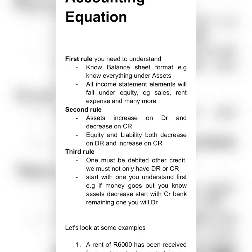The third rule: when we are dealing with accounting equation, if one account is debited, the other one must be credited. There is no way you will find a transaction where all amounts are debited — it doesn't work like that. One must be debited and the other one must be credited. After all, the amount on the debit must be the same amount on the credit. That's where we say that the balance sheet has balanced, because the accounting equation is the same as the balance sheet and the income statement.